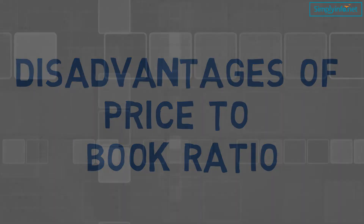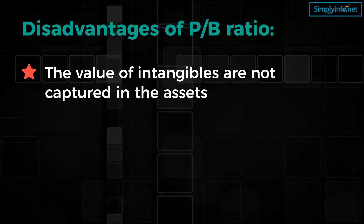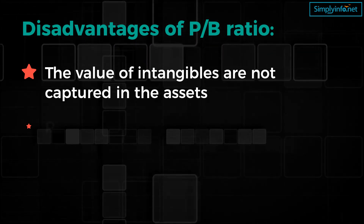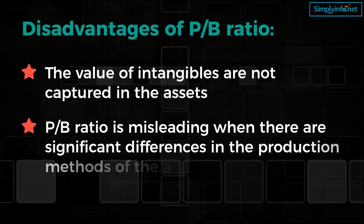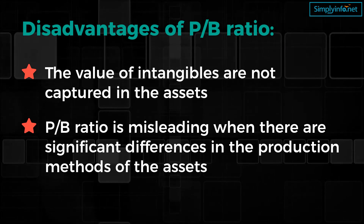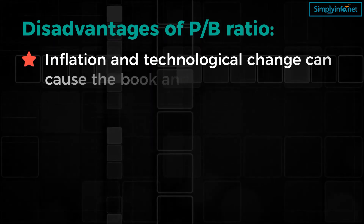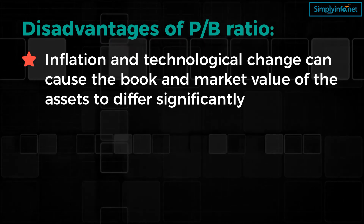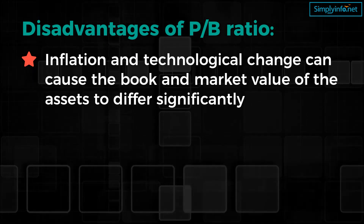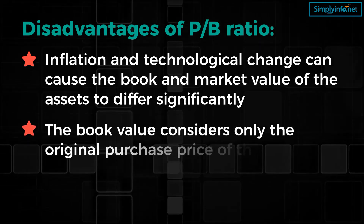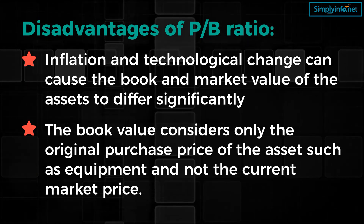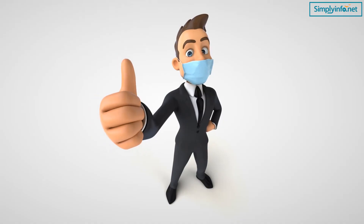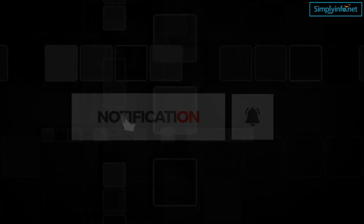Disadvantages of PB ratio: The value of intangibles is not captured in assets such as brand value, goodwill, and human capital of service companies. The PB ratio is misleading when there are significant differences in the production methods of assets among firms. Inflation and technological change can cause book and market values of assets to differ significantly, so book value is not an accurate measure of shareholder investment value. The book value considers only the original purchase price of an asset, not the current market price, which reduces accuracy. Thank you so much for watching. Please like this video and share.